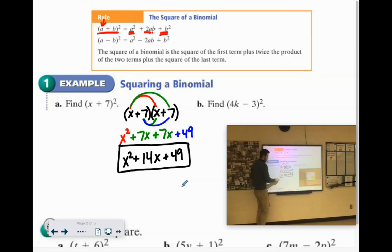Now look at what we ended up with. Our first term was X, so we have X squared. Our last term was 7. 49 is just 7 times 7. So you square the first term, you square the last term. The middle term was when you multiply them together, and then multiply by 2.